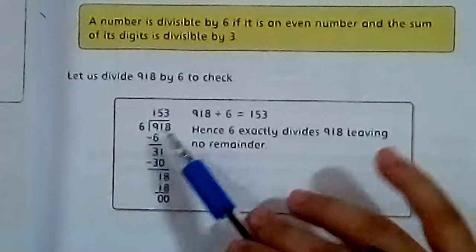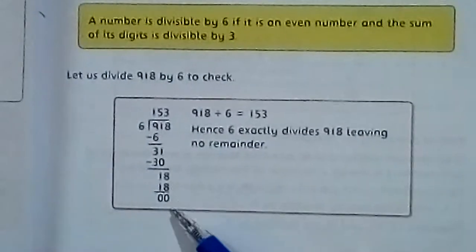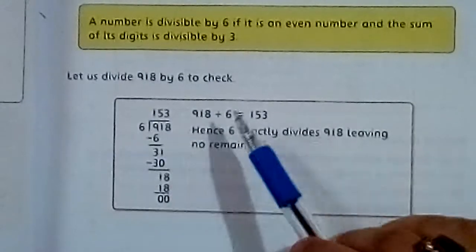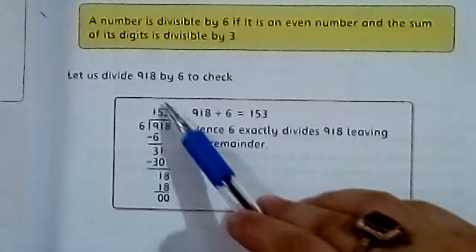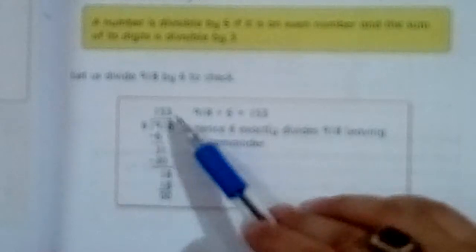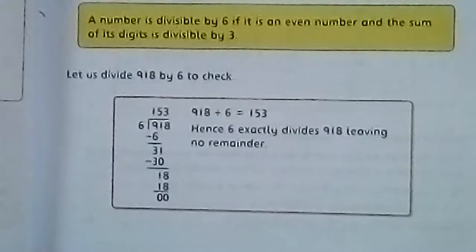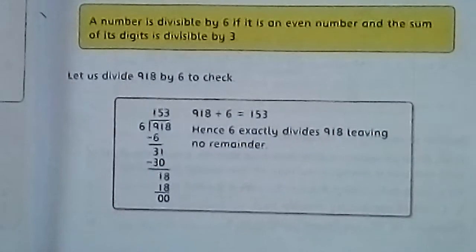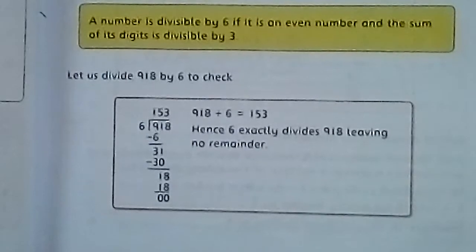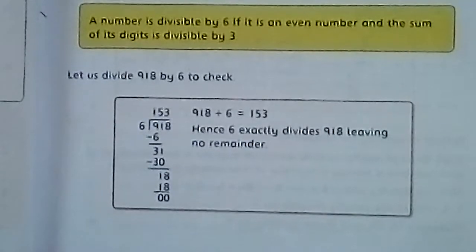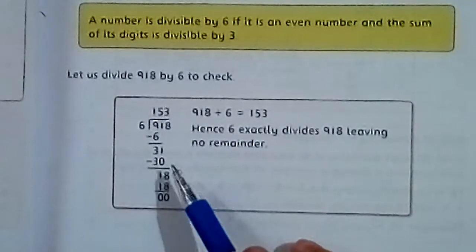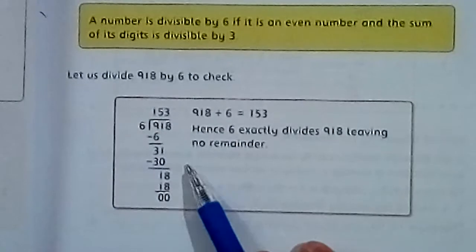So aapke paas jo number 918 isko aap divide karenge to remainder 0 aa raha hai, to it means ki jo aapne ye aapka method hai check karne ka theek hai na? Ki agar aap ek dafa divide karke dekh lo to remainder 0 aa raha hai to it means ki woh jo number hai woh divisible by 6 hai. So is number ko aapne rough notebook pe check karna hai.